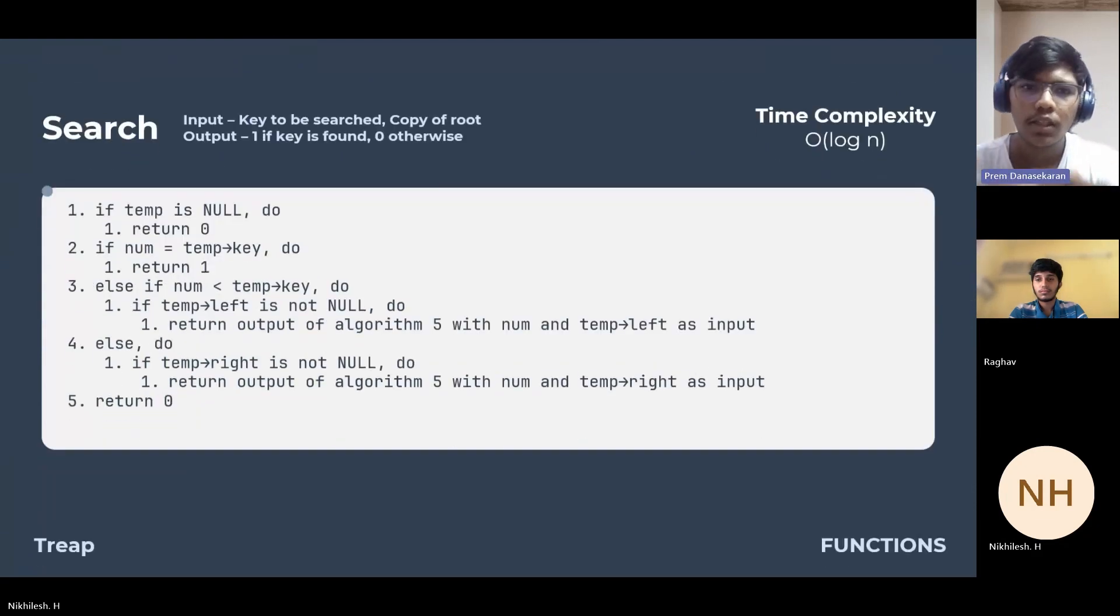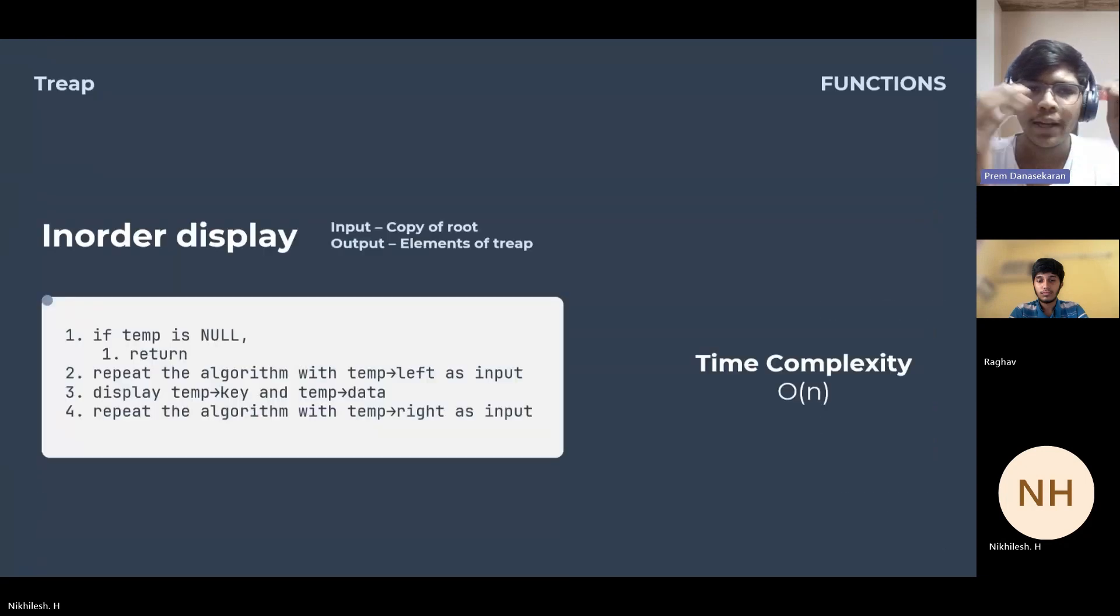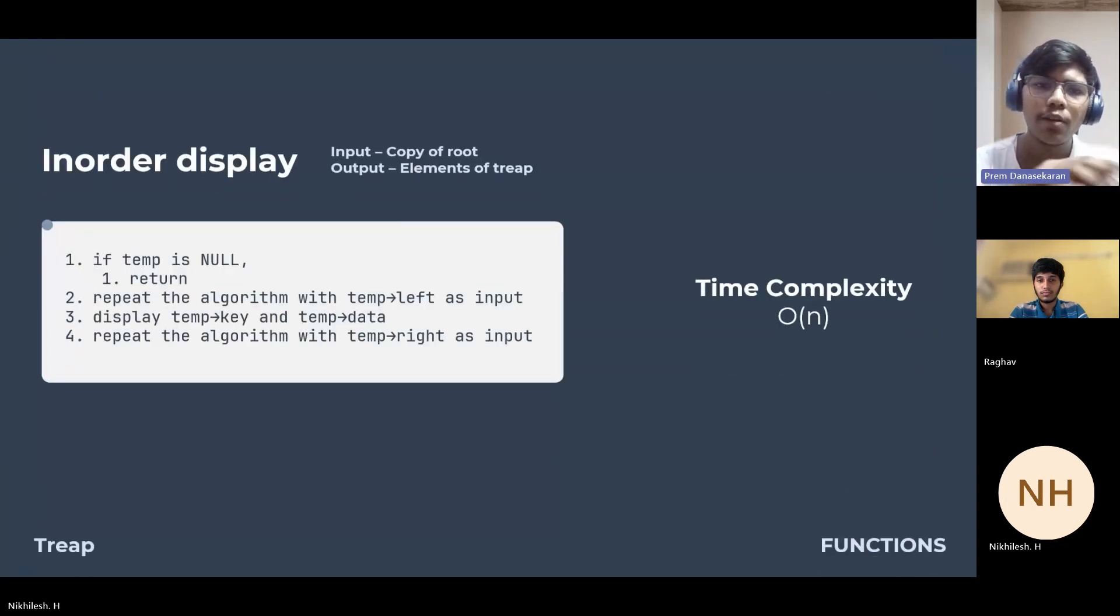Next we look at search. The search function serves the purpose of locating data associated with the provided key within the tree. It operates in accordance with the binary search tree property, systematically traversing through the tree to identify the specified key. This operation has time complexity of O(log n). Next, we'll look at in-order traversal. We use the common recursive calls of in-order traversal to display all the nodes of the tree. The time complexity is O(n).